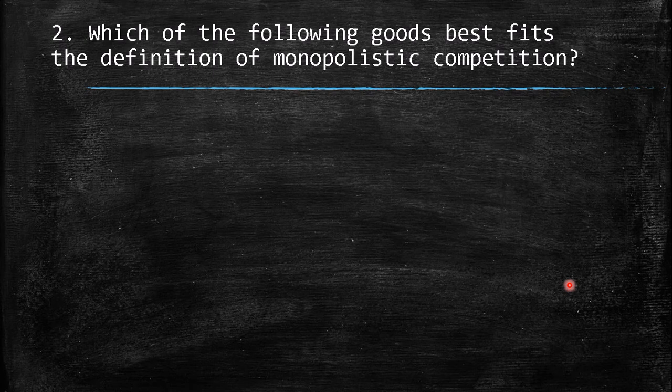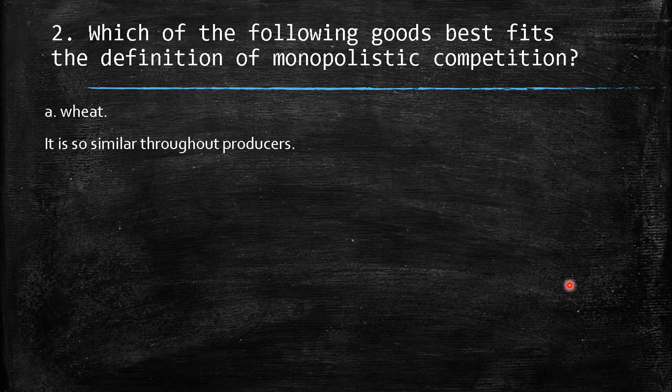The second question asks: which of the following goods best fits the definition of monopolistic competition? Option A is wheat. Since wheat is a commodity, the quality from one producer to another is basically the same, making it hard to associate with monopolistic competition — products are too similar across producers.